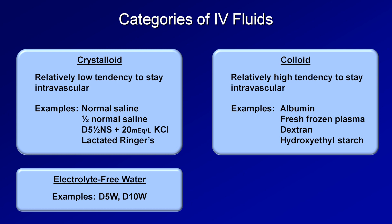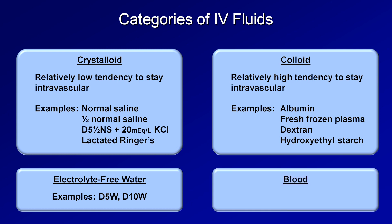The last category of IV fluids is blood, such as packed red blood cells, which is only used to treat severe anemia. I occasionally hear people refer to packed red blood cells as a colloid fluid, but that's not exactly accurate and it's better to think of it as a distinct category. The rest of this video is going to be focused on just the first two categories — crystalloid and colloids.